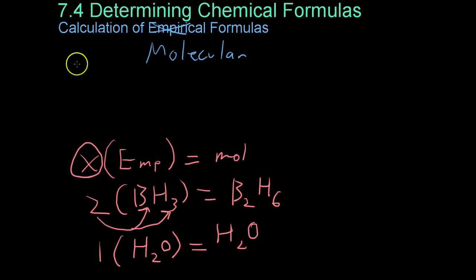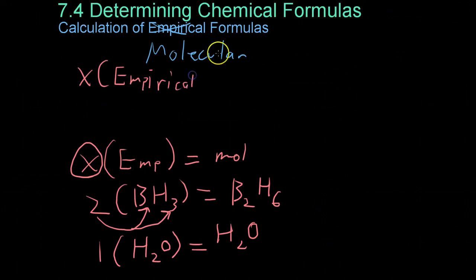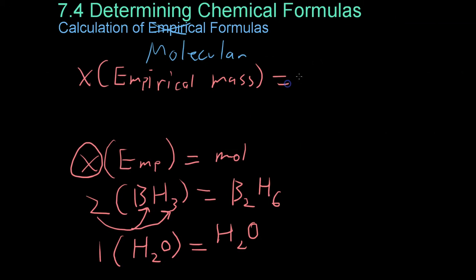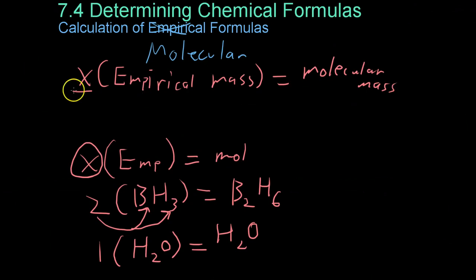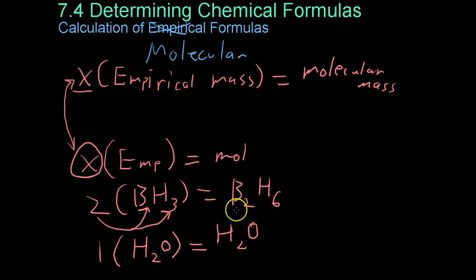Now, importantly, the formula masses follow this same sort of structure within the equation. So, if you take the empirical formula mass and multiply it by some coefficient, you will get the molecular formula mass. And this structure makes it very easy to figure out this coefficient x and therefore figure out the proper molecular structure for a molecular compound.